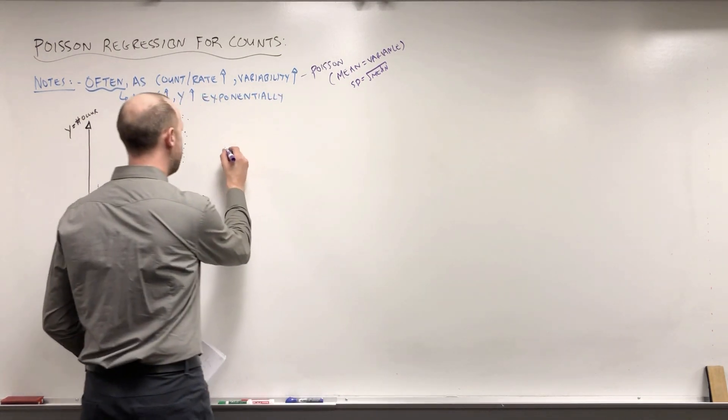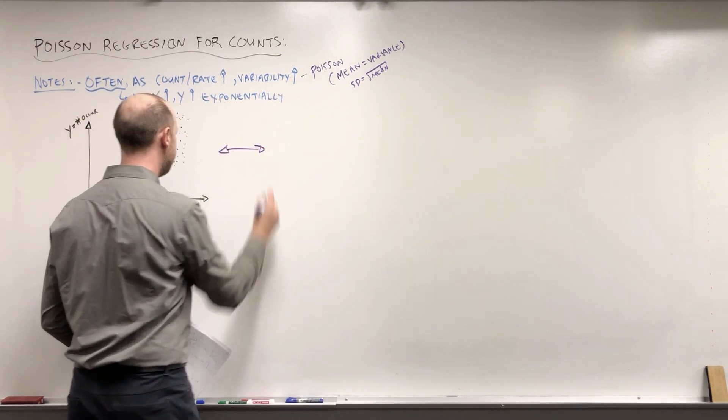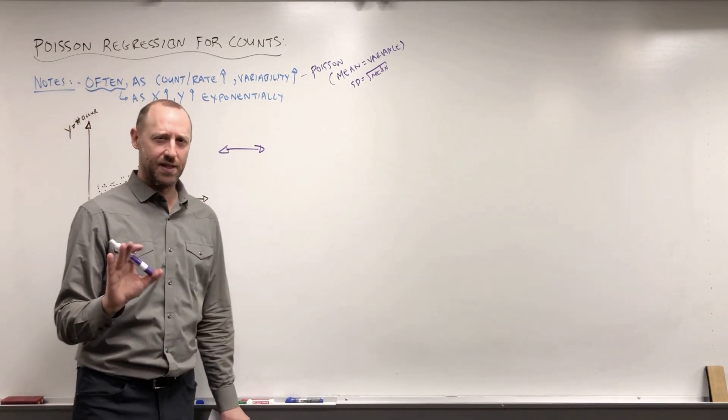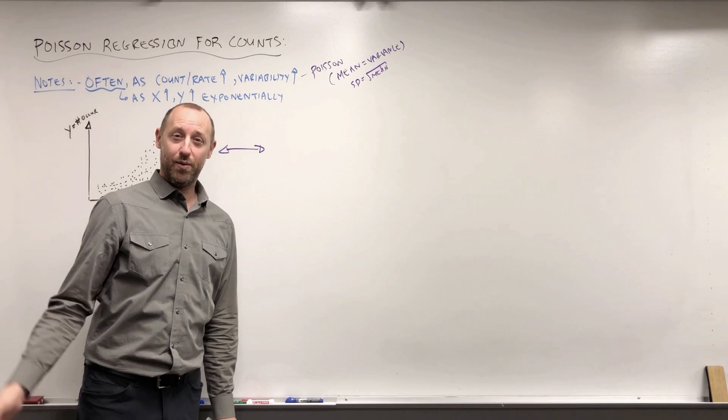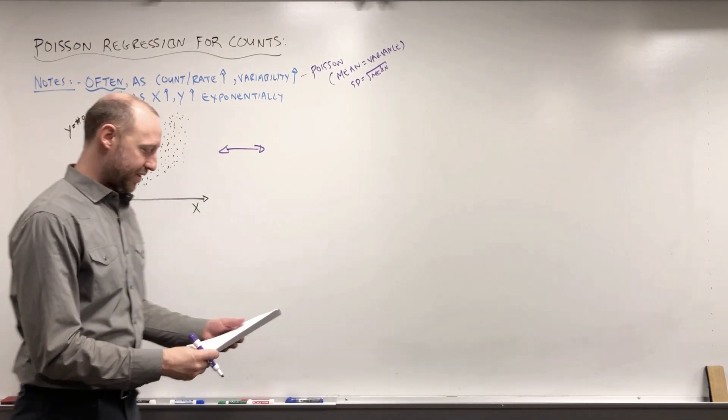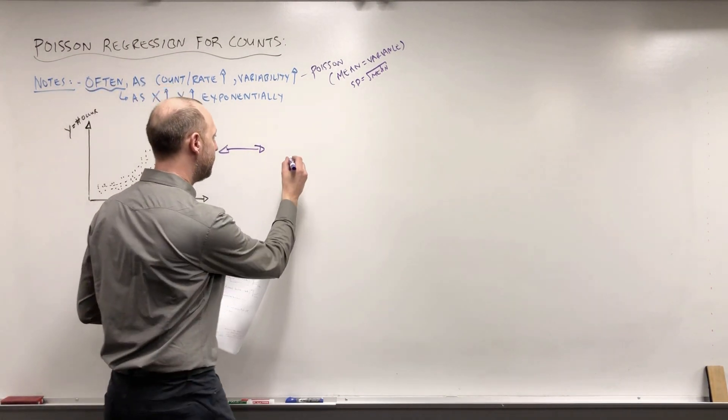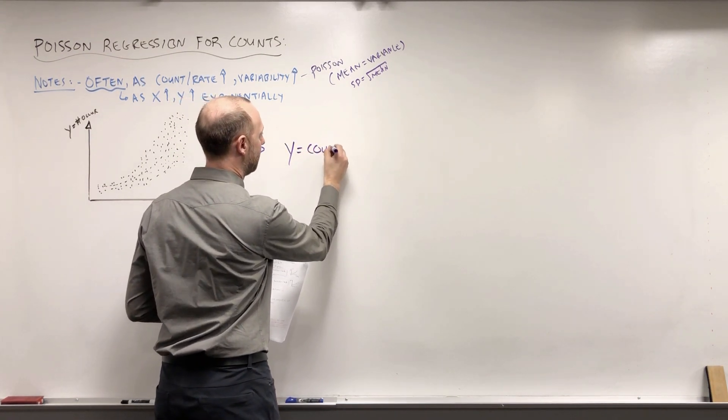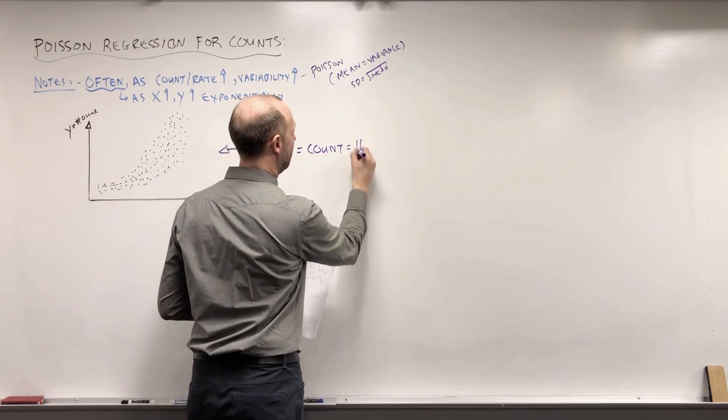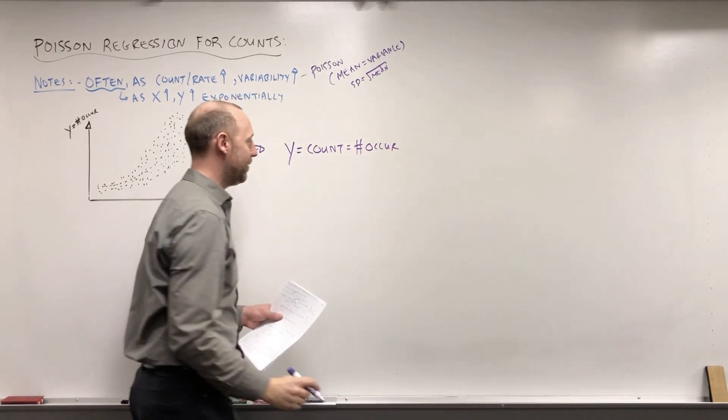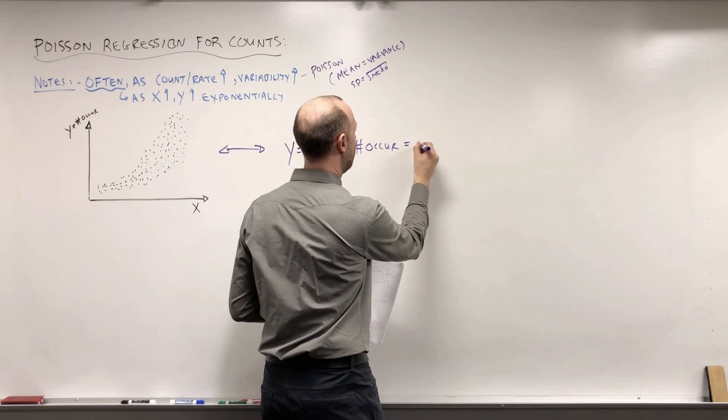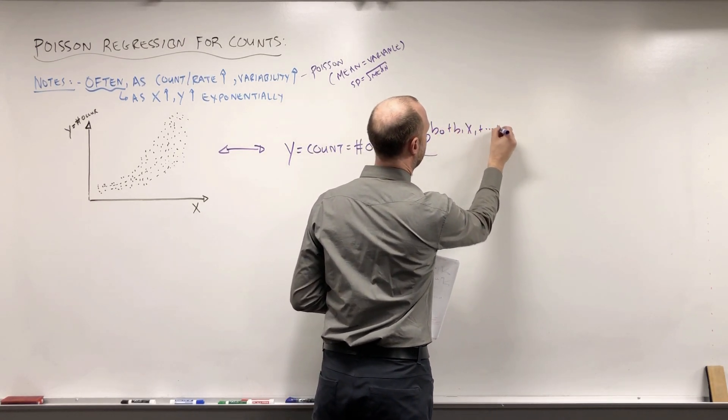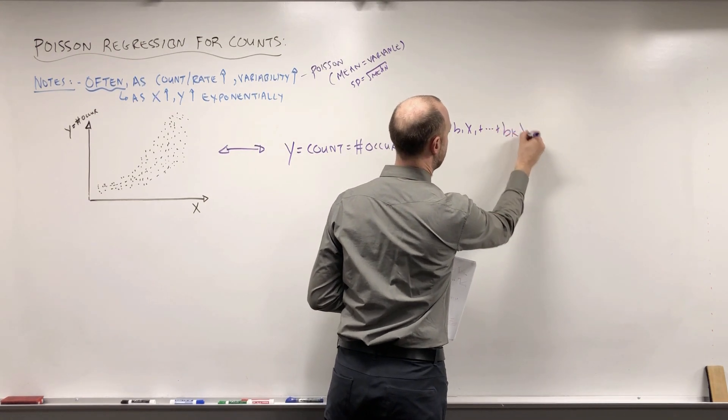So if we want to think about how we can model this, I'm going to move a bit more quickly through this because what we're going to see is very similar to what we saw in linear regression and logistic regression and so on. Here we can model y, the count, or the number of occurrences, I'm just writing the same thing in multiple ways, as an exponential function of the x variables that we have.